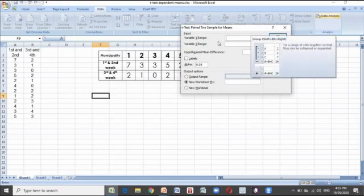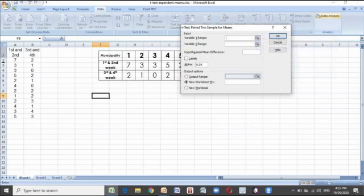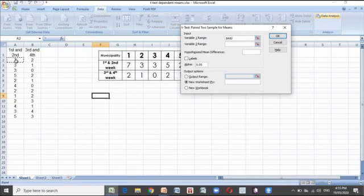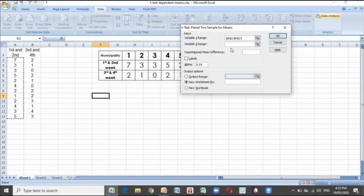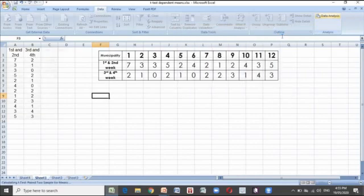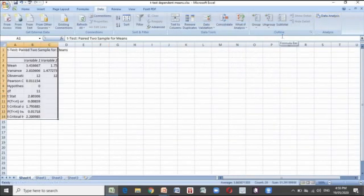We do have the dialog box. For variable 1, we are going to highlight the data collected for the first and second week. For variable 2, we have the third and fourth week data. The level of significance is 0.05. Then click OK.